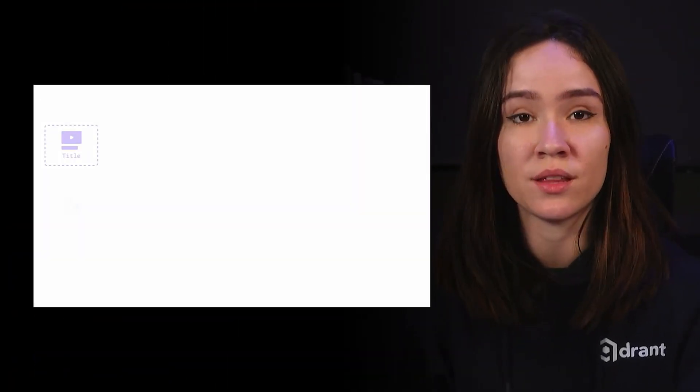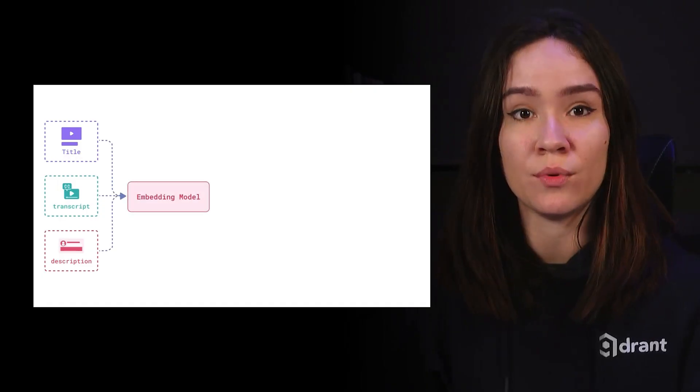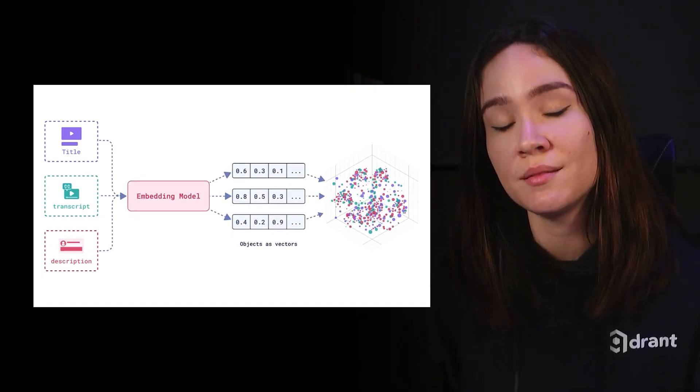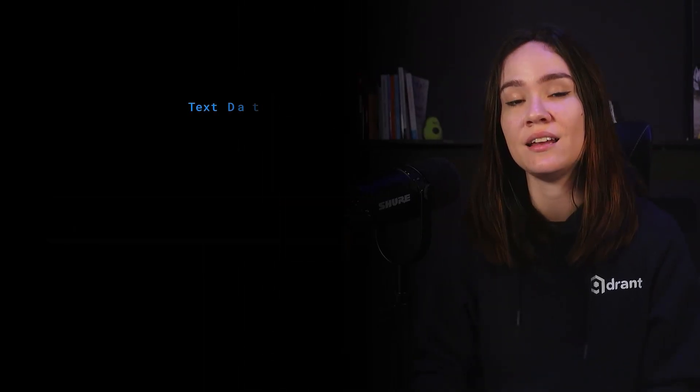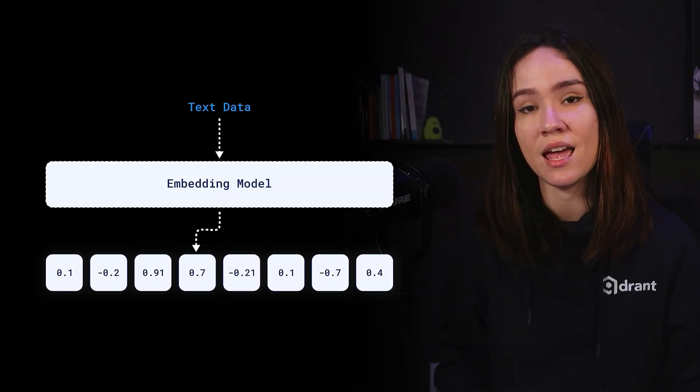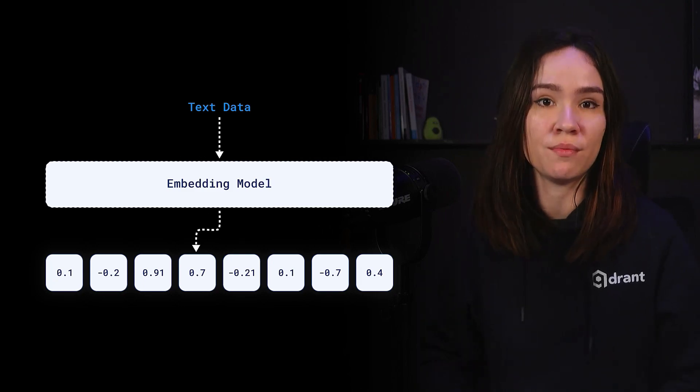The first type of vector you can have is a dense vector. Those are vectors usually created by what we call embedding models, or neural networks. Embedding models learn from large datasets to understand meaning and context within data, and serve to place them within a vector space so that similar things are placed close together. That way, we can use those embedding models to capture complex relationships within our own data as well. For example, if I use an embedding model for text data, it will be able to capture semantics, context, and relationships associated with my text data.